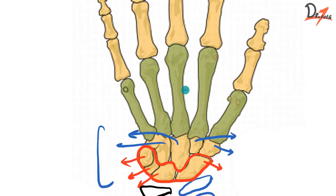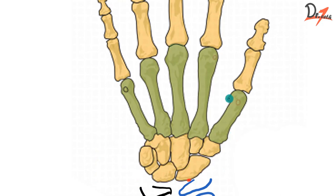Now let us move on to the metacarpals. As we can see, they are five in number and are numbered from one to five starting from the thumb to the little finger. So the thumb is one, then two, three, four, and five.